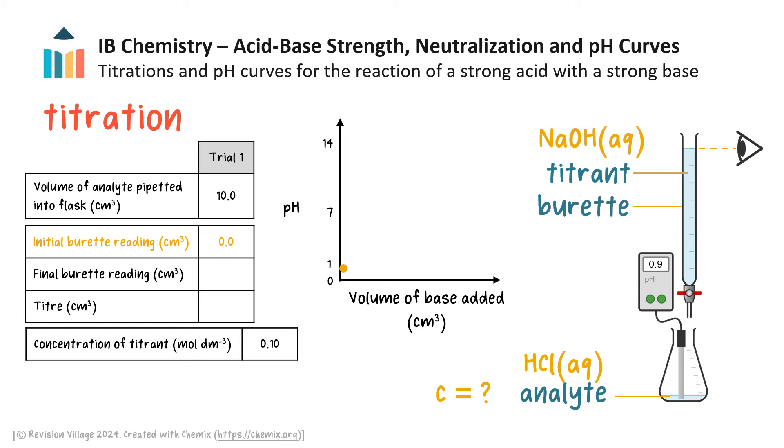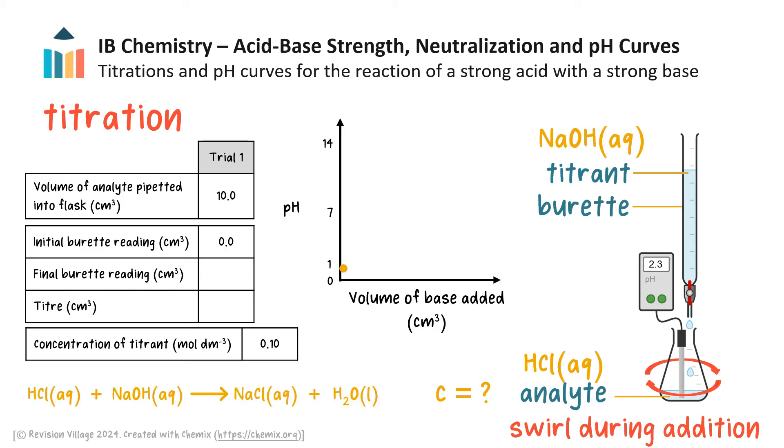The tap or stopcock on the burette is opened, and titrant is then slowly added to the analyte, whilst swirling the conical flask to ensure proper mixing. And a neutralization reaction occurs. In this example, this is the neutralization reaction. The pH of the solution in the conical flask is measured and plotted as more and more titrant is added. The pH in this titration will increase, as the volume of base added to the flask increases. But there is still excess acid present, and so the pH is still in the acidic range. Notice the pH curve is not linear, but gradually increases.